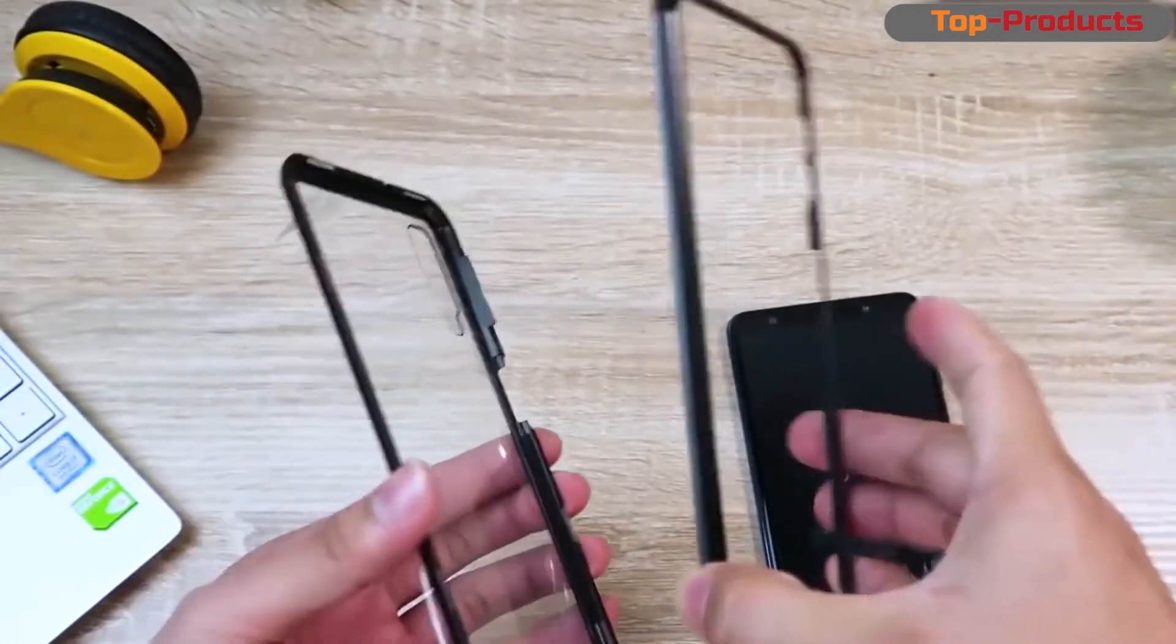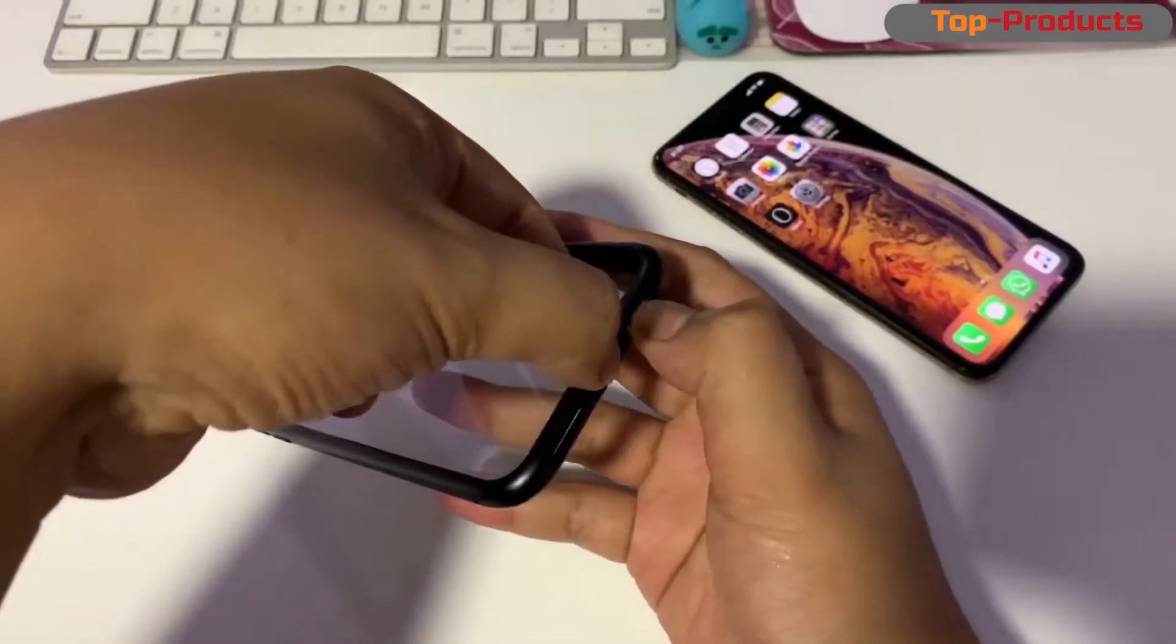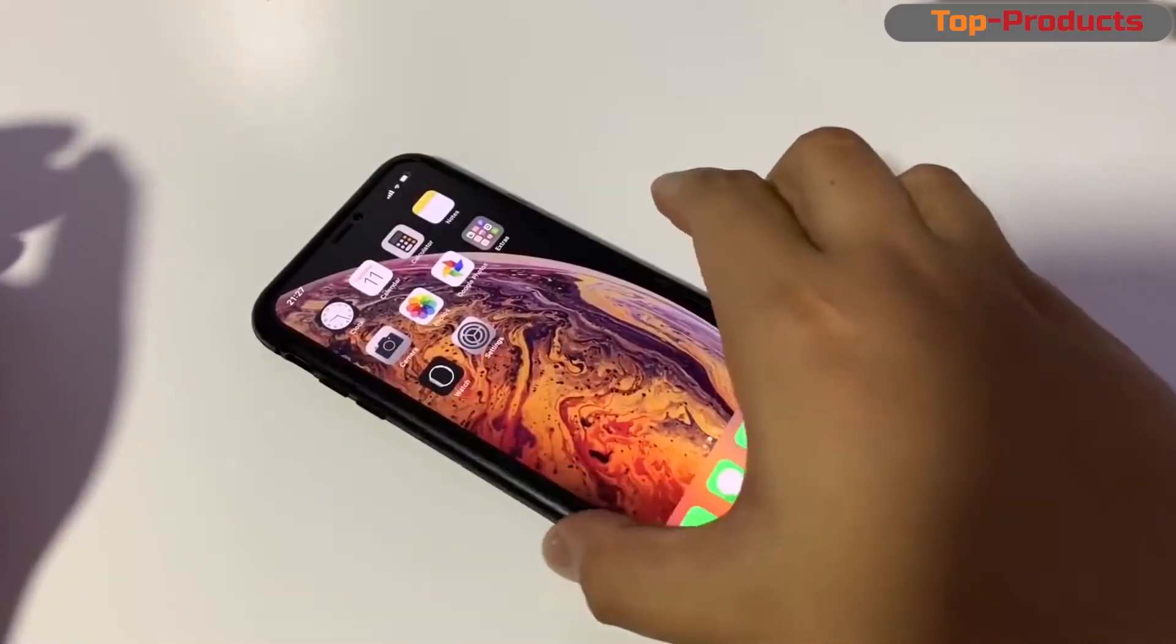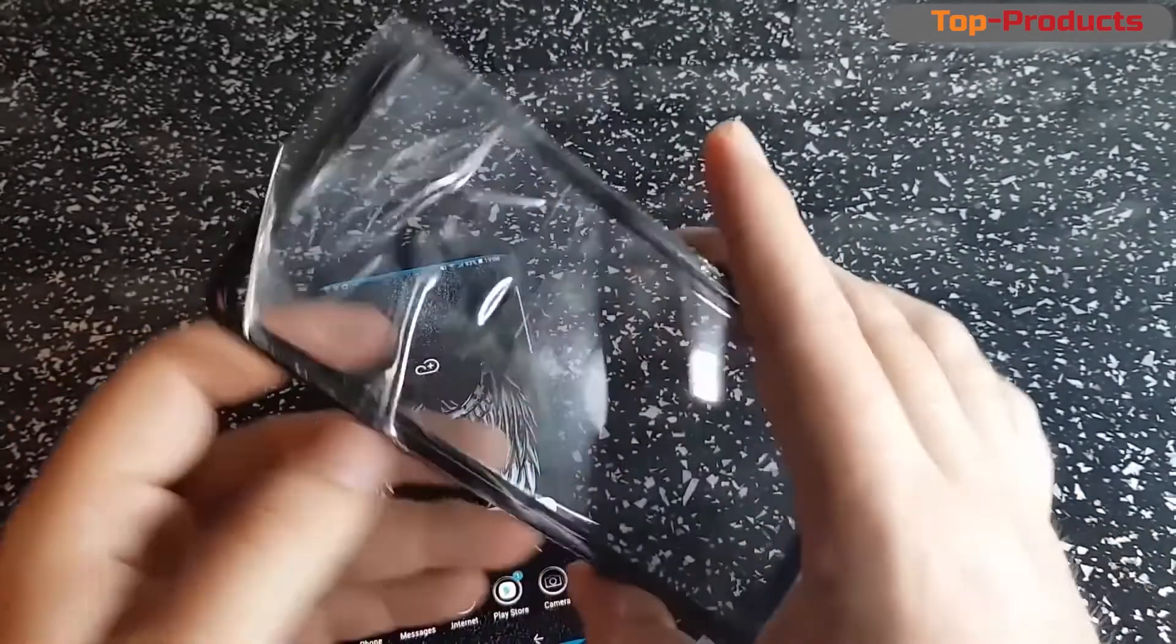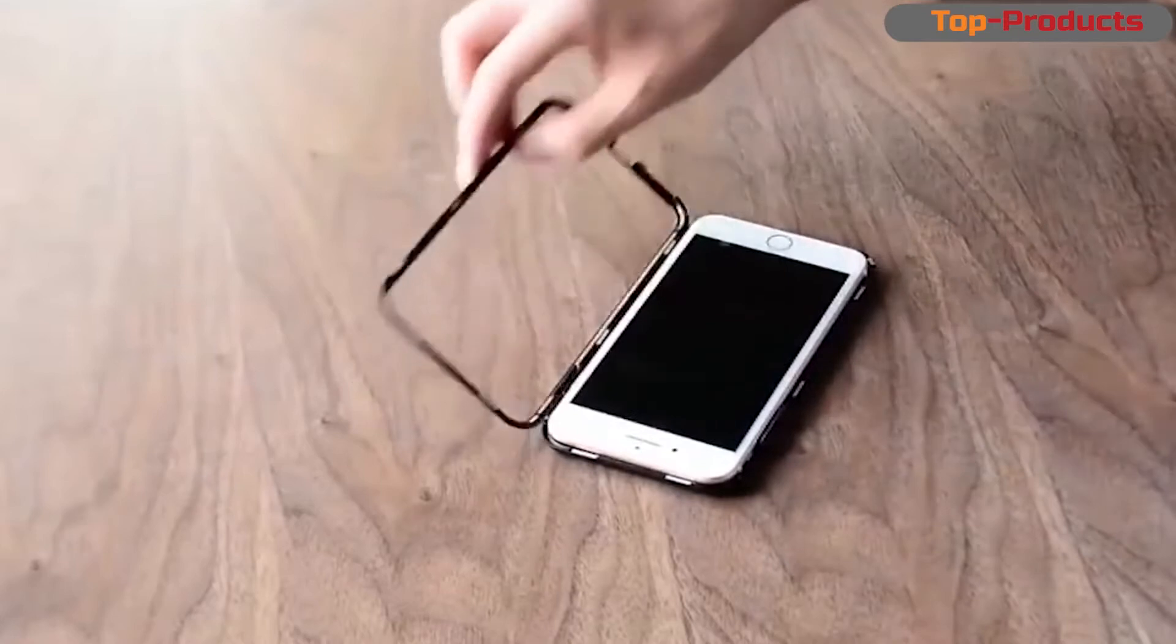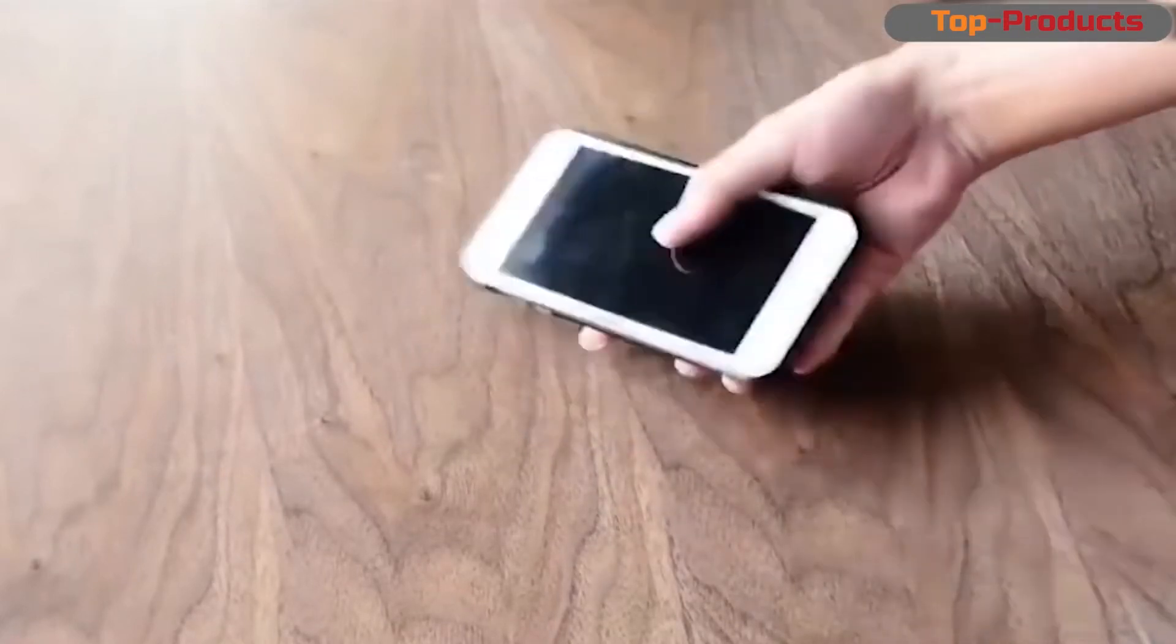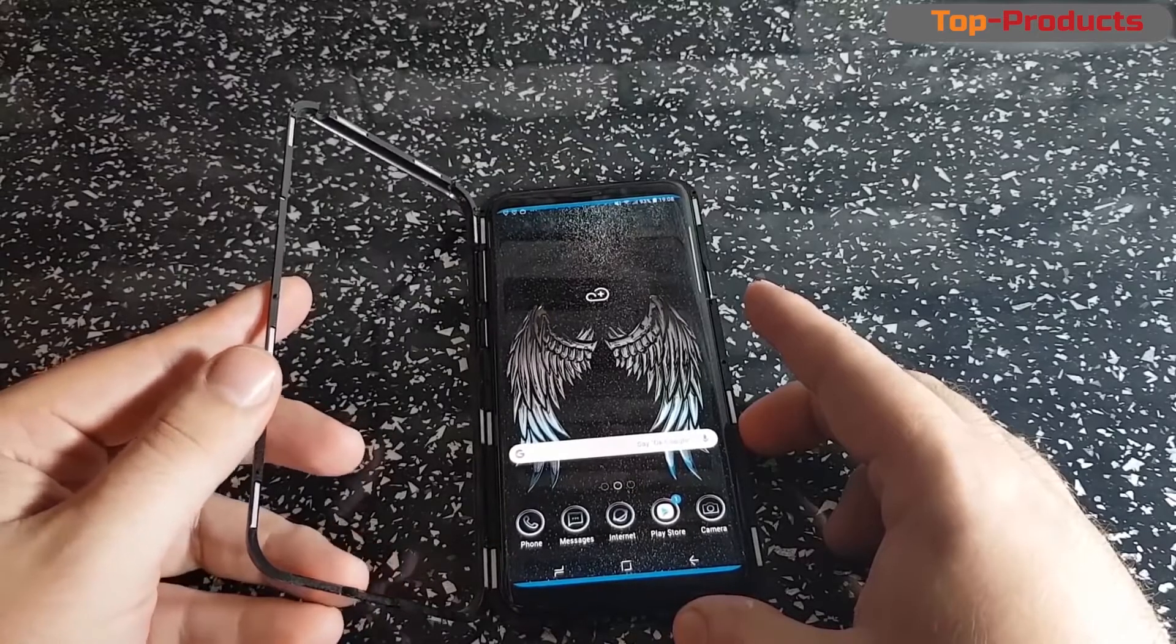And this is a magnetic case. It is not easy to open, it didn't work out the first time. The magnets really hold very tightly. All the necessary holes in the case are made correctly, the speaker, charging, headphones, volume, lock, camera, everything is neat and even without distortions. But the glass on the case, which is very easily soiled at the back, leaves fingerprints and stains at the slightest touch. Despite this, thing is still cool and there are too many orders.